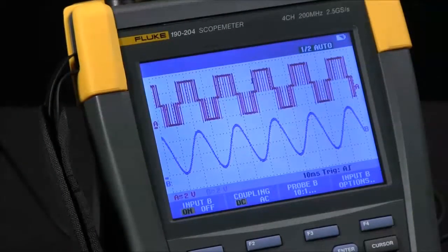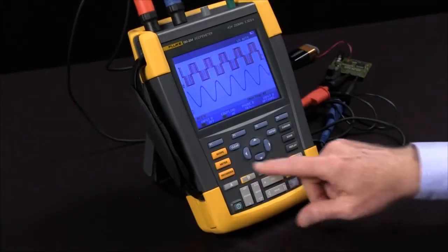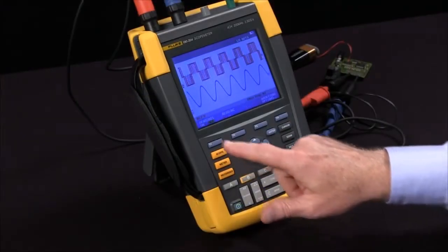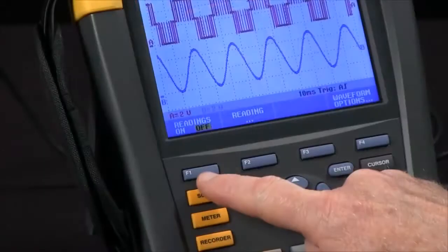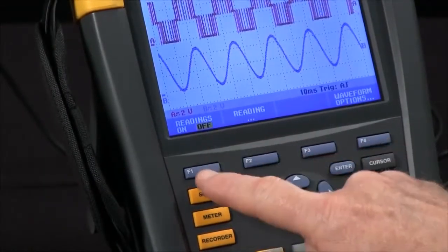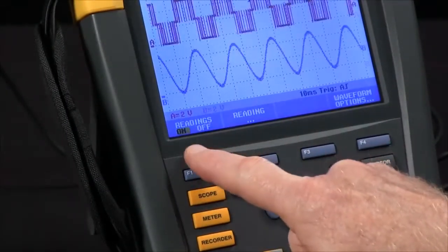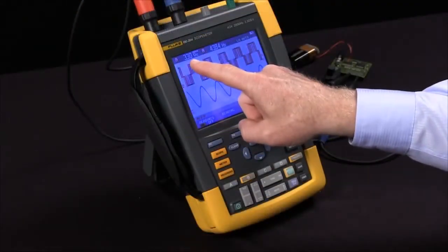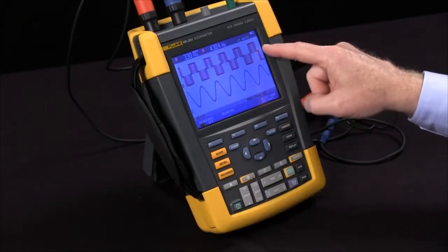The next thing I want to do is to make some measurements. If I hit the scope button, I've got readings now for F1. They're turned off. F1 turns them on. I now see voltage and frequency for channel A.